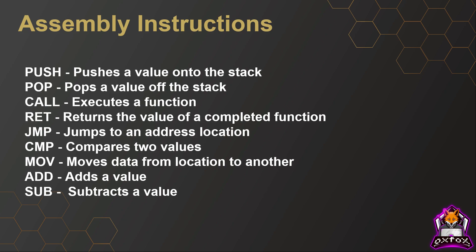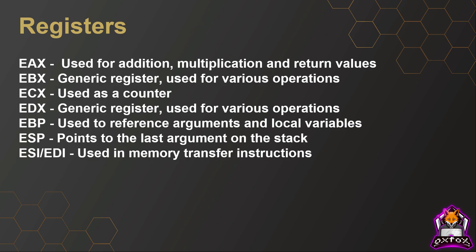Ret is when a function is ending — it's going to return the value of the completed function. Jmp is where it's jumping to an address location; you'll see various different jumps and how those work in other videos. Cmp is compare, so two values may be compared. Move is where data is being moved from one location to another. And we have add and sub, which are adding and subtracting a value.